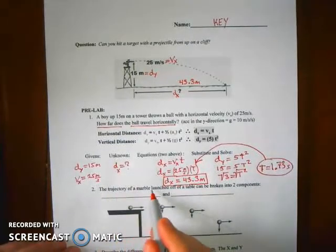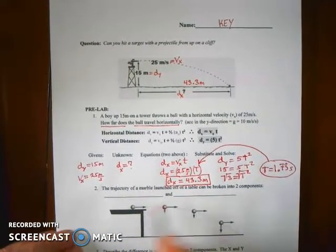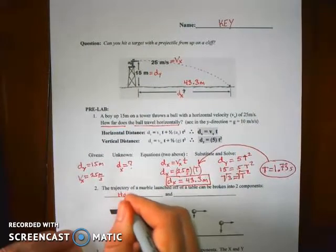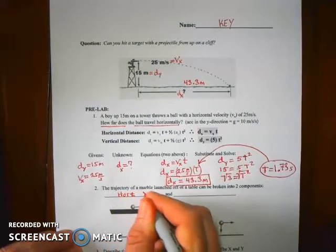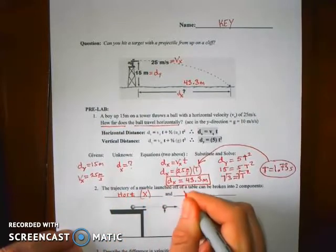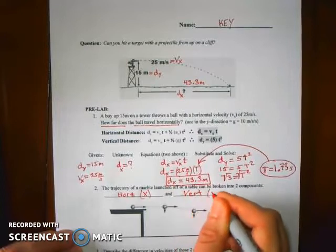So if you want to break down the trajectory of this ball launched off the table, like your coins, like you shot coins off the table, you have to break it into two components, right? We just talked about this. The horizontal component, or x component, and then the vertical component, or the y component.